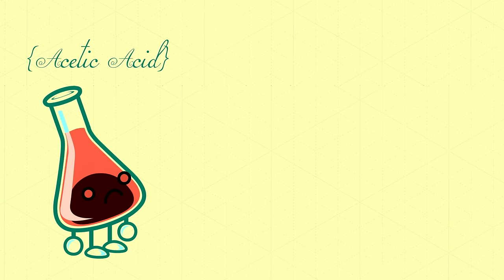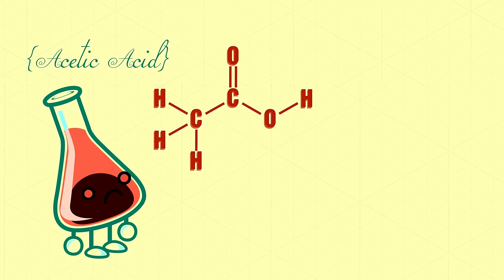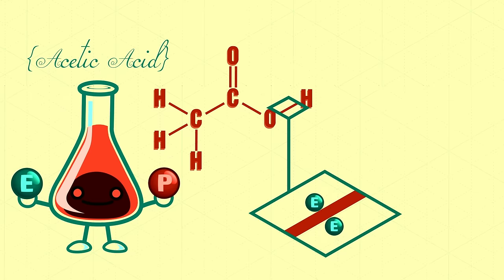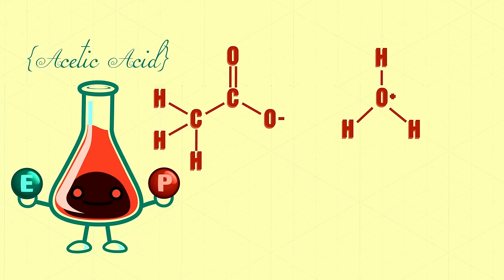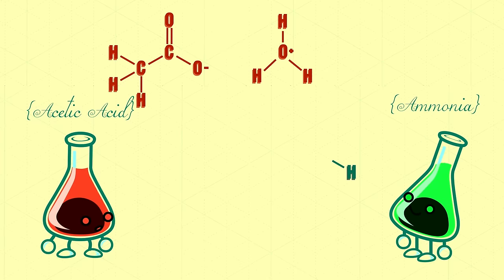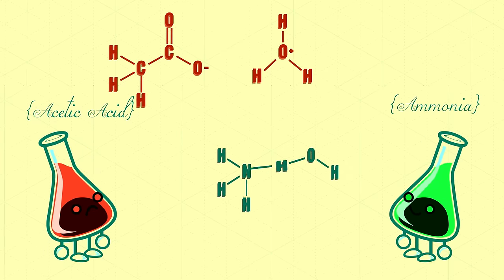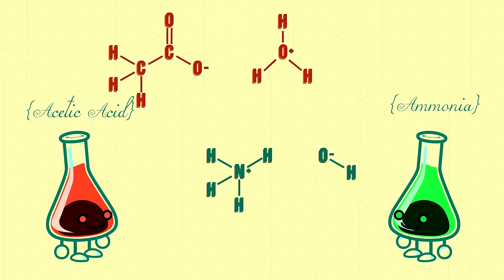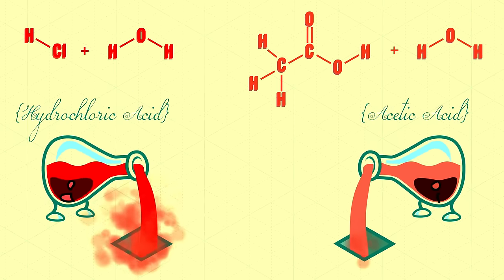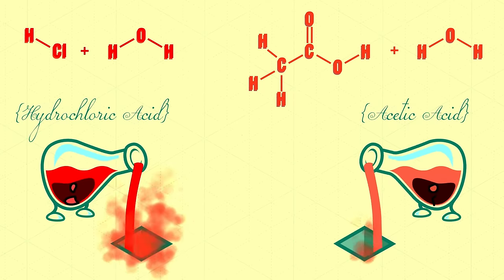When molecules dissolved in water interact, they're exchanging two main currencies with their surroundings: protons, also known as hydrogen ions, and electrons. Depending on how a molecule is composed or shaped, it may be willing to donate or accept either protons or electrons with some other community member. And some molecules are far more aggressive than others when it comes to donating or accepting either currency.